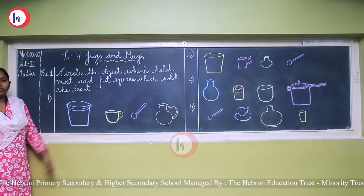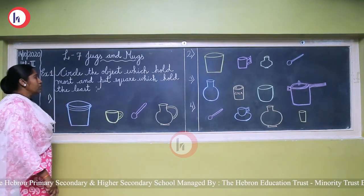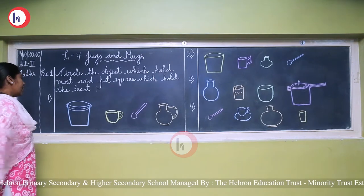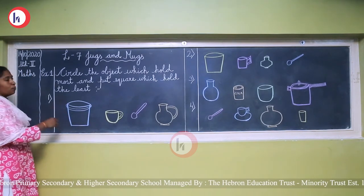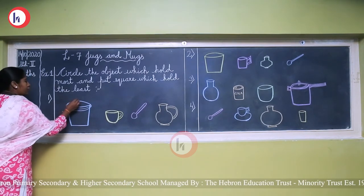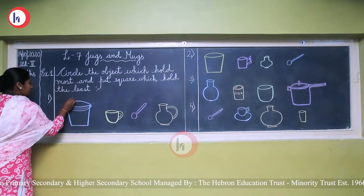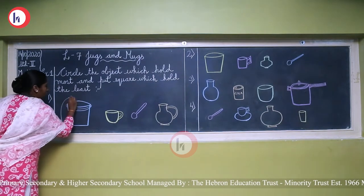Now you can see the images where I have drawn certain objects. We have four objects. Can you tell me which one can hold the most? Yes, obviously a bucket can hold the most, so we will circle that object.